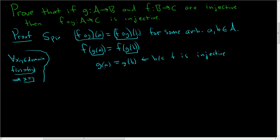In the next step, we have little g of a equal to little g of b. Therefore, little a is equal to little b. And this step here is because g is injective.